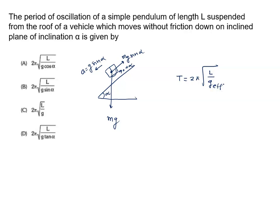What is the effective acceleration acting on this bob? One acceleration is acting in the downward direction, that is g. Another acceleration is acting in this direction, that is g sin alpha. The angle between g and g sin alpha is 90 plus alpha.